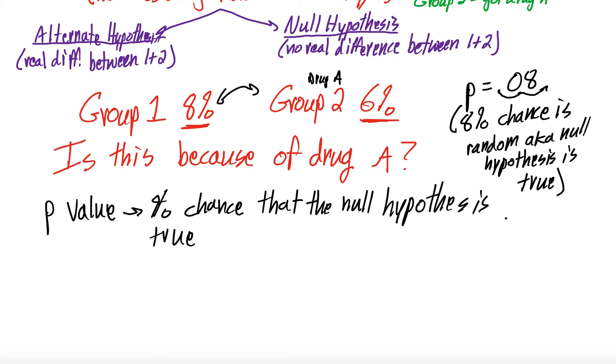You could say this for any p-value. So a p-value of 0.34 means there's a 34% chance that the null hypothesis, being that there's no difference between the two groups, is true, and that this difference is random chance and it's not because of drug A. A p-value of 0.01 means there's a 1% chance that the null hypothesis is true, and that this difference is random and it's not because of drug A.